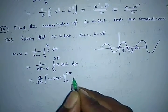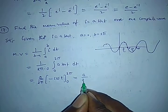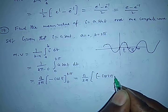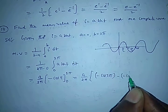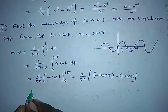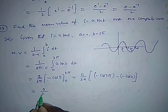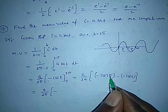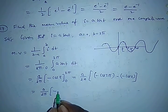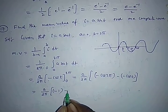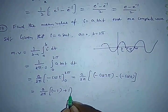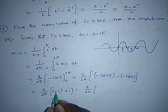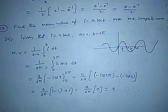Substituting the limits: (a / 2π) × [-cos(2π) - (-cos(0))]. Now cos(2π) = cos(360°) = 1, and cos(0) = 1. So this becomes (a / 2π) × (-1 + 1) = (a / 2π) × 0. The answer is 0.